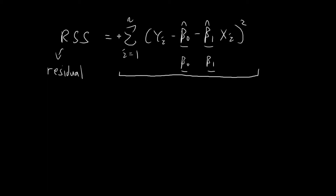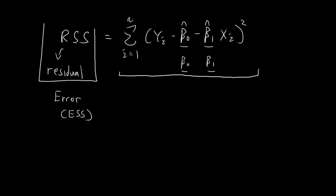They are estimates such that this entire term is minimized, so we've actually already encountered this term right at the very start. People also give this concept an alternative name — some call it the error sum of squares, or ESS. But for this and later videos, I'll just stick with the terminology of residual sum of squares.